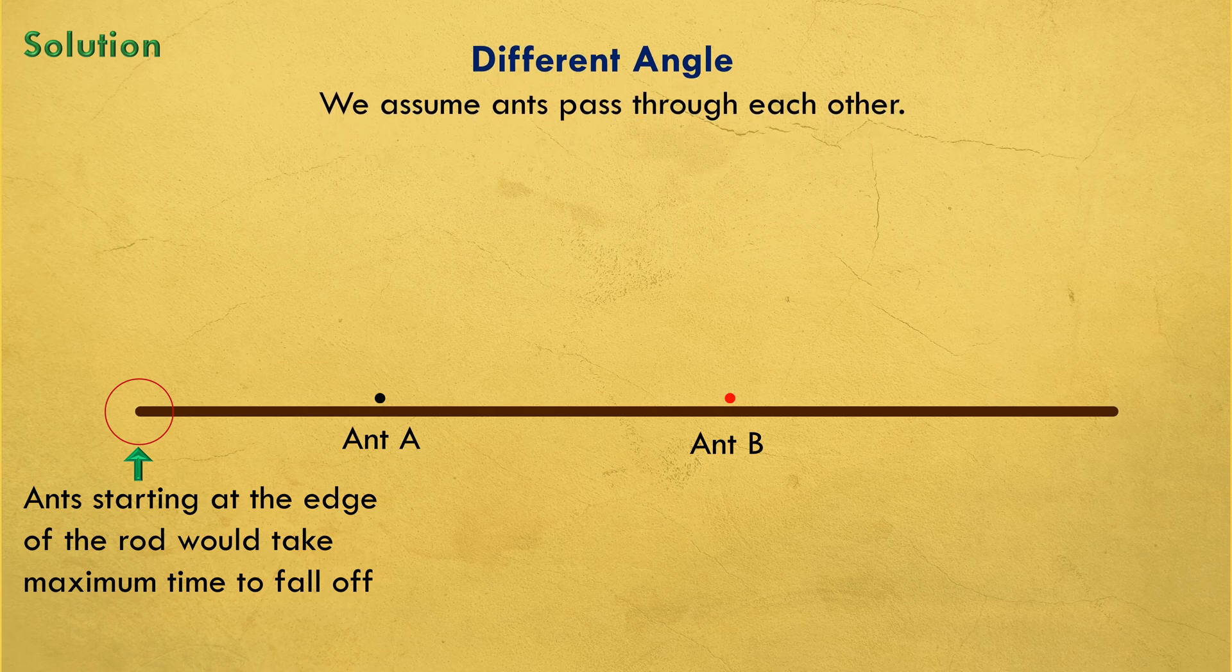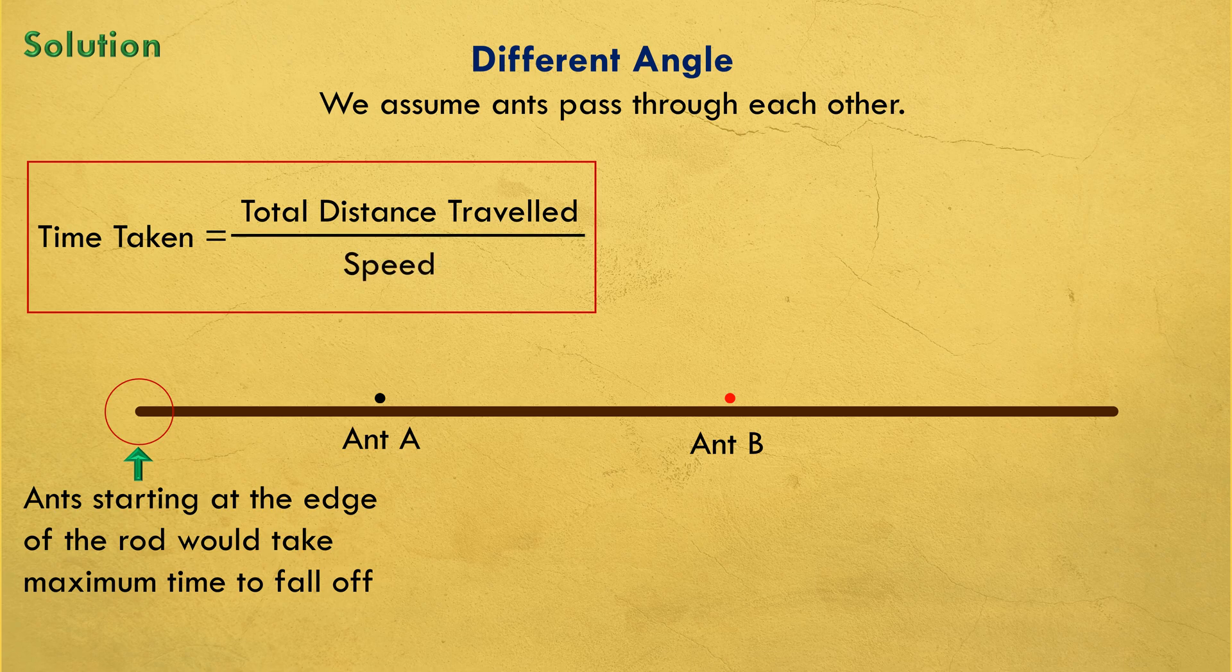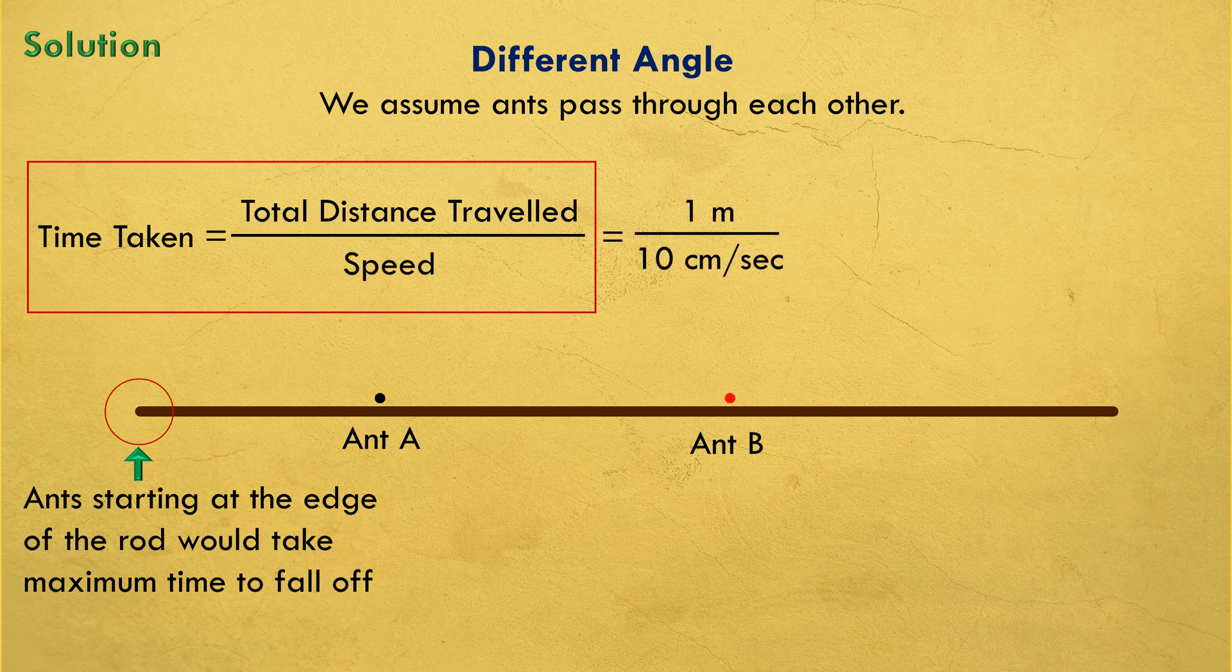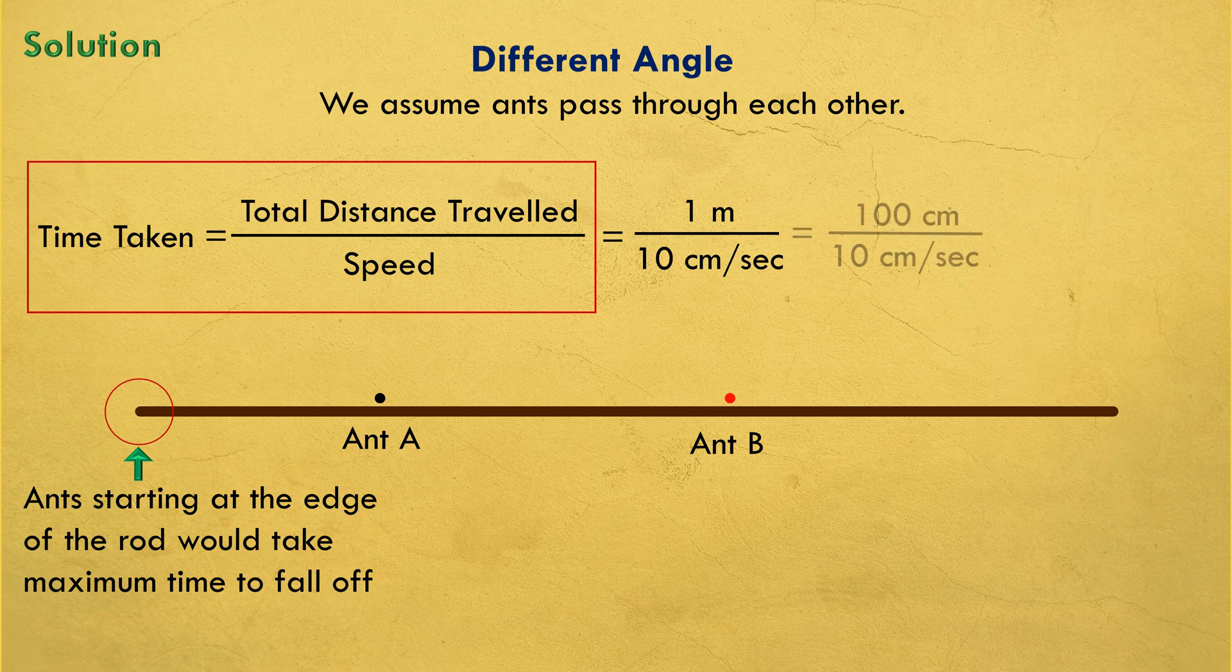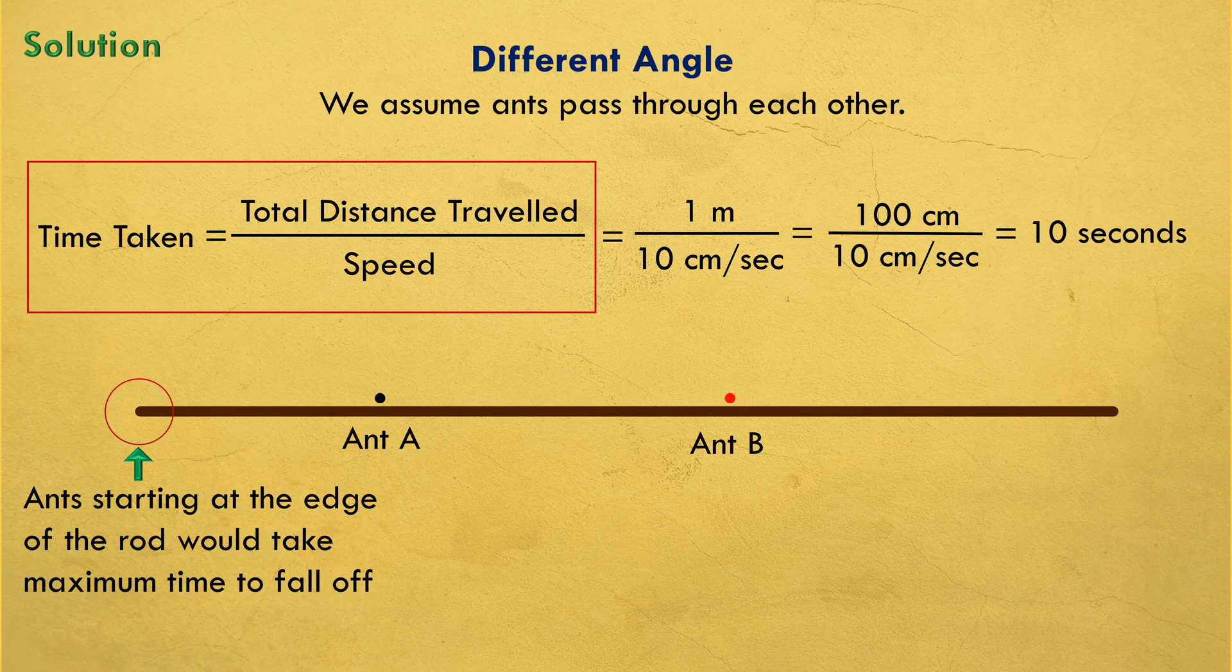And when it does so, the total time taken would be equal to the total distance traveled by the ant before it falls off divided by its total speed. So that should be equal to 10 seconds. So the answer to the question is 10 seconds.